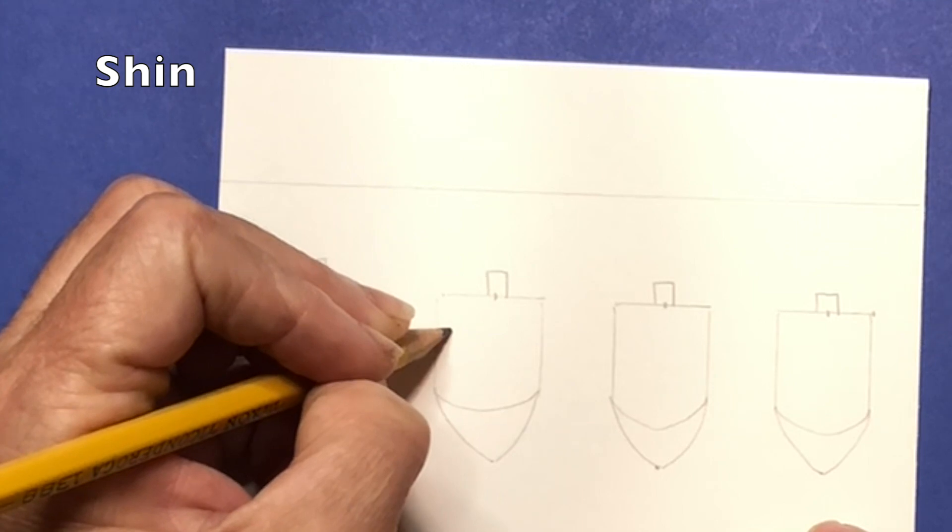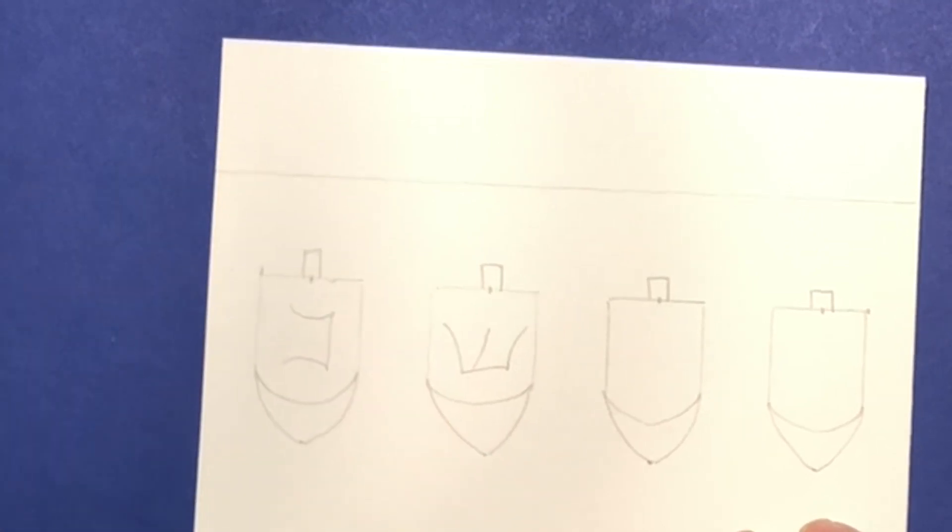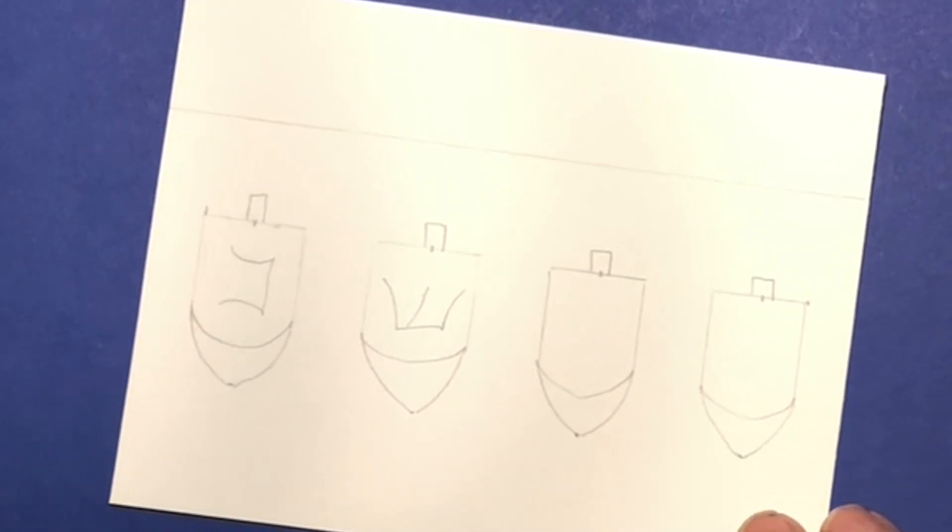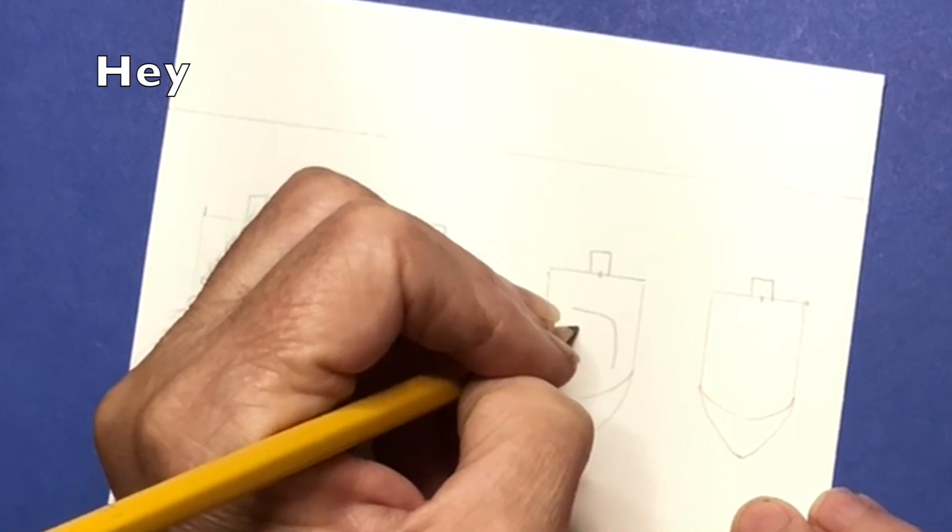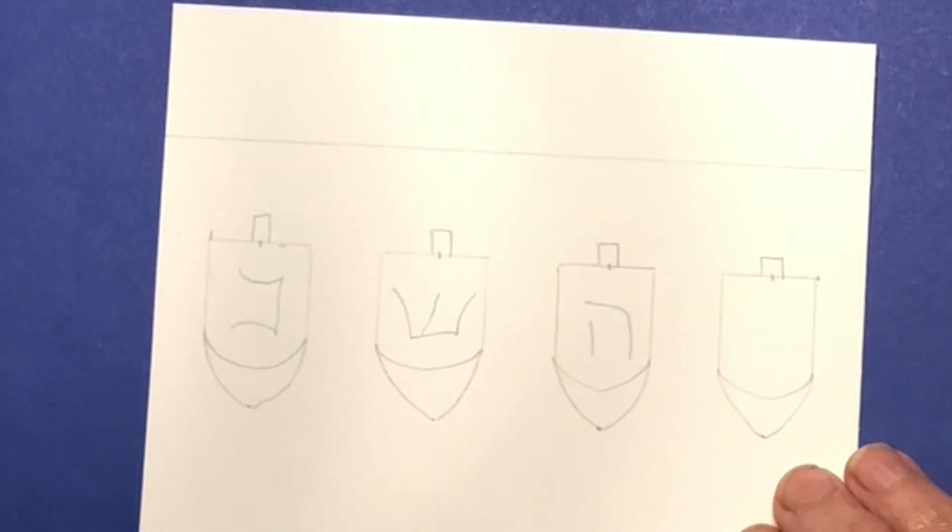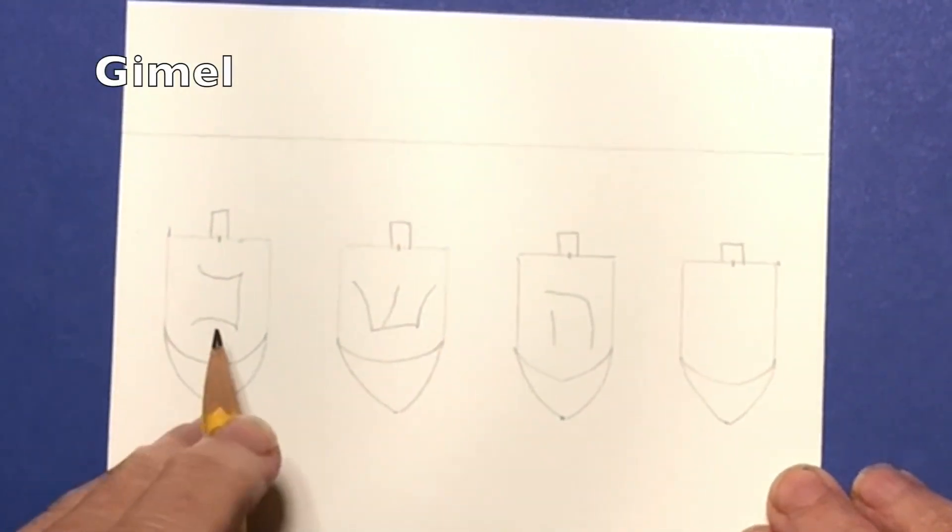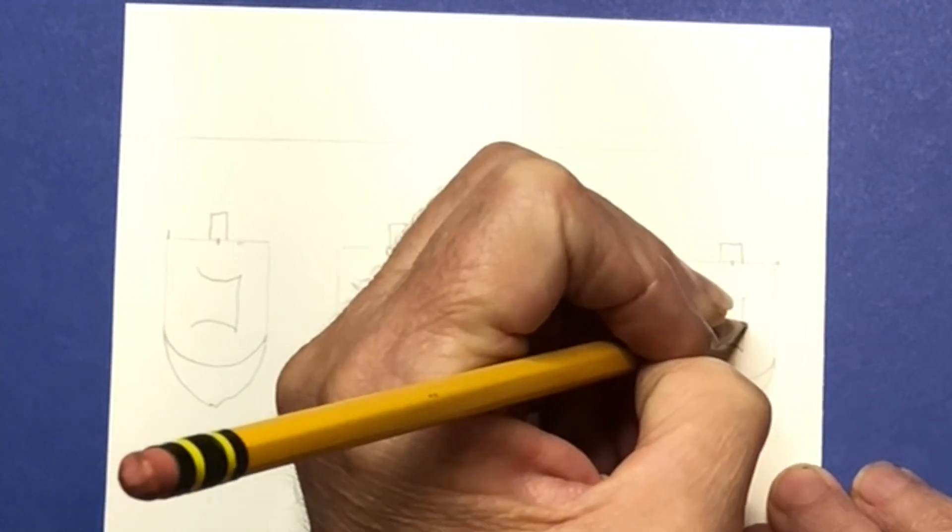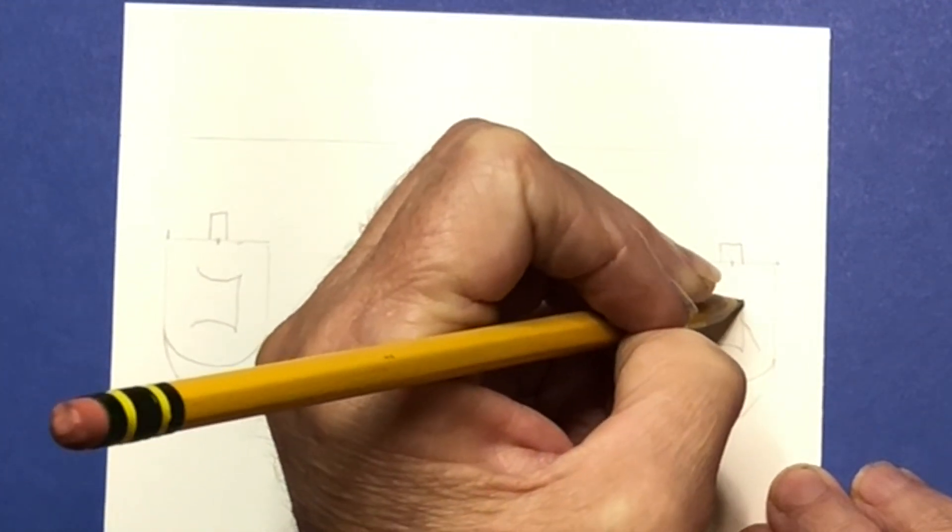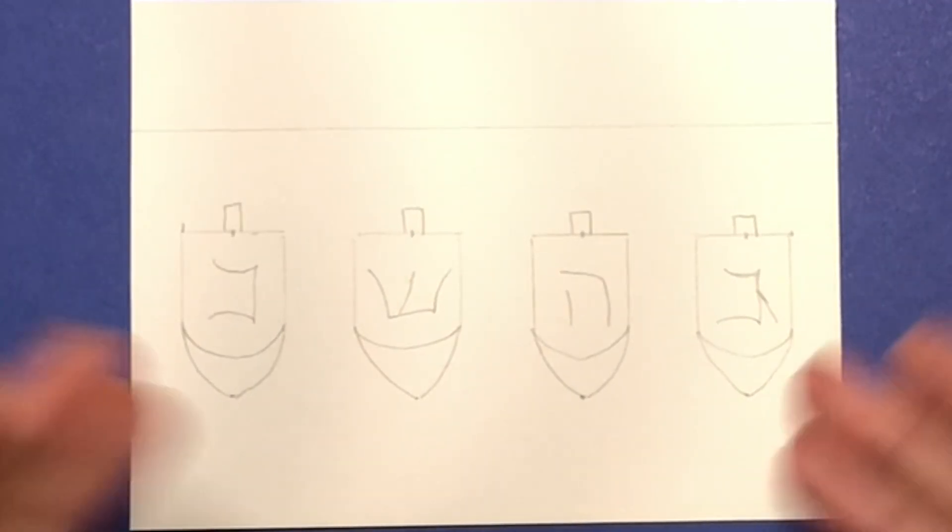Then the shin is just a W. It's gone a little wonky. Very easy. It's just a W. The hay is just, again, very wonky. You can do it any style you want. And then the last one is gimel, which is very close to the none. It's just the same format, but it's got a foot.